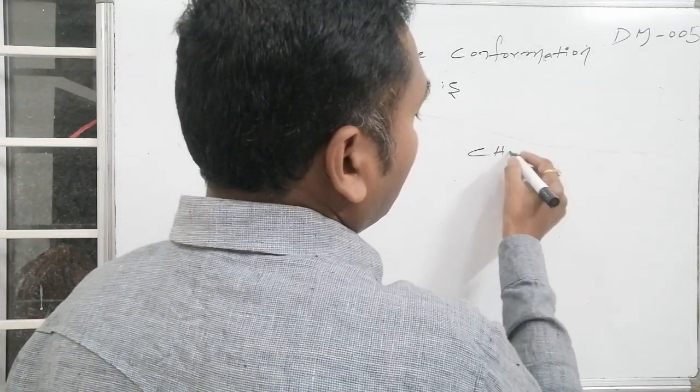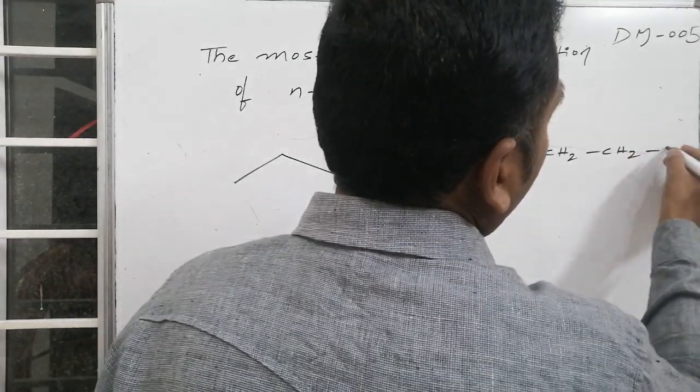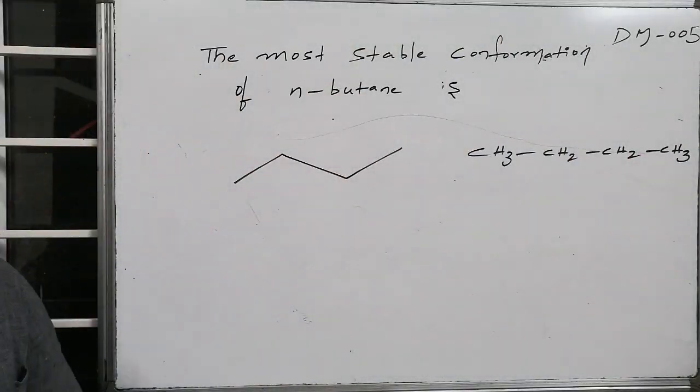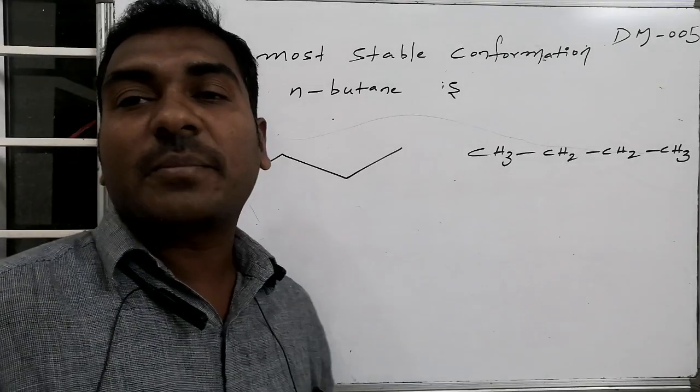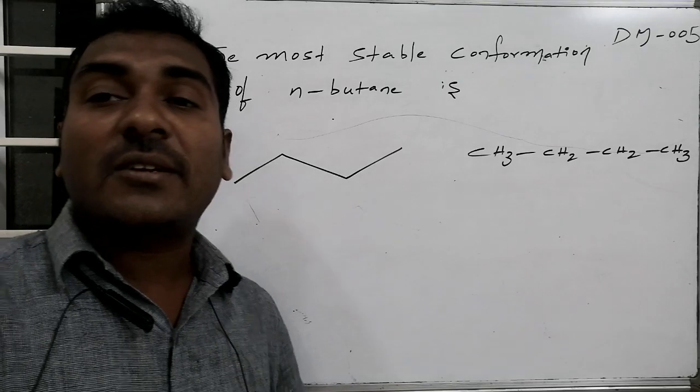If I write in very systematic manner this will be CH3, this will be CH2, this will be CH2 followed by this also becomes CH3. This is known as butane linearly present, there is no substitution, hence we can say it as n-butane.